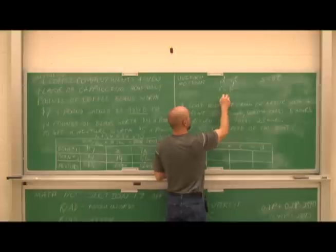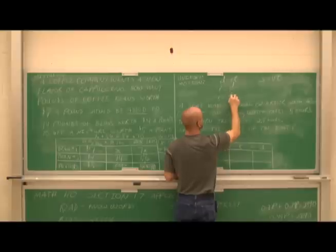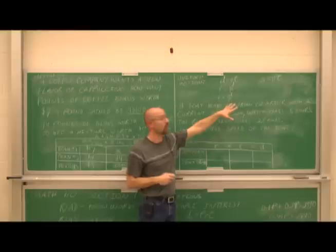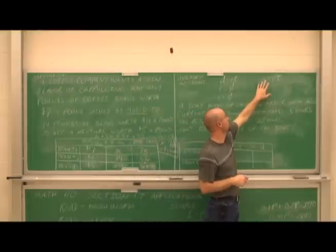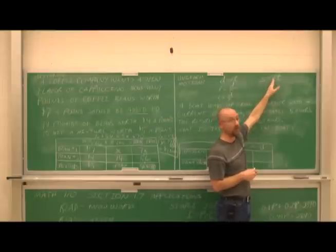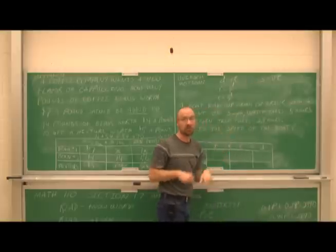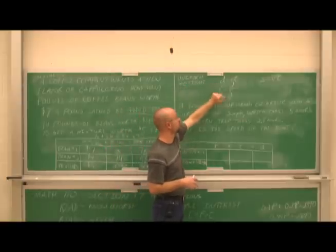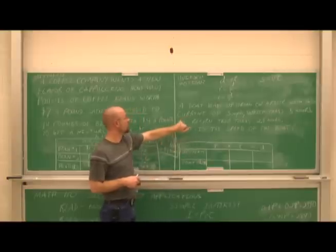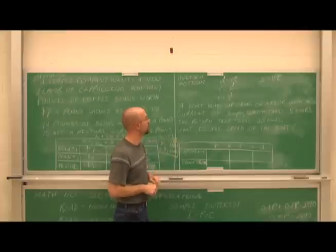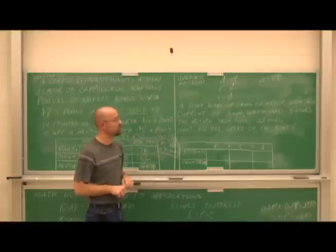We can rearrange: time equals distance over rate. Sometimes displacement is labeled S = VT, where V is velocity. Time is pretty consistent no matter the form. Any variation is just algebraic rearrangement. So let's look at this application problem: a boat heads upstream on a river with a current of 3 miles per hour, which takes 5 hours. The return trip takes 2.5 hours. What is the speed of the boat?